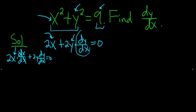Now we just have to solve for dy dx. So we'll subtract 2x from both sides, minus 2x, minus 2x. So we get 2y times dy dx equals negative 2x.